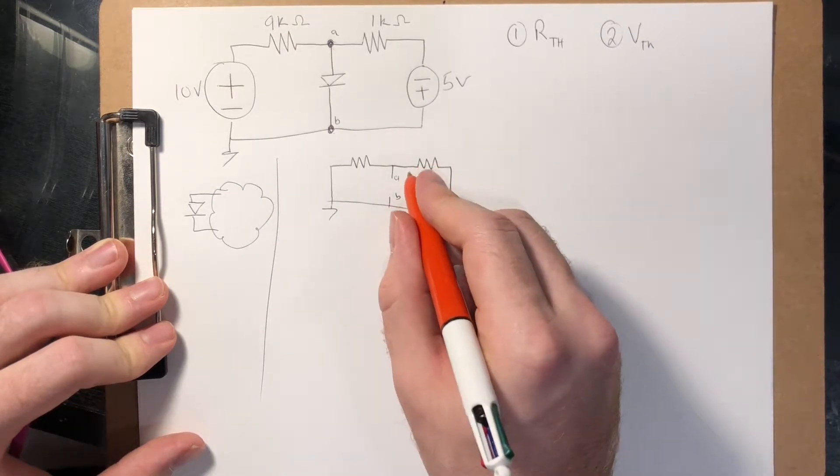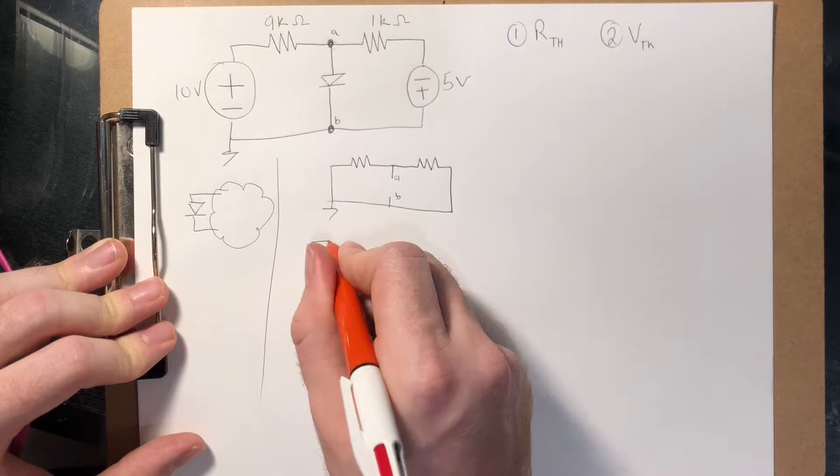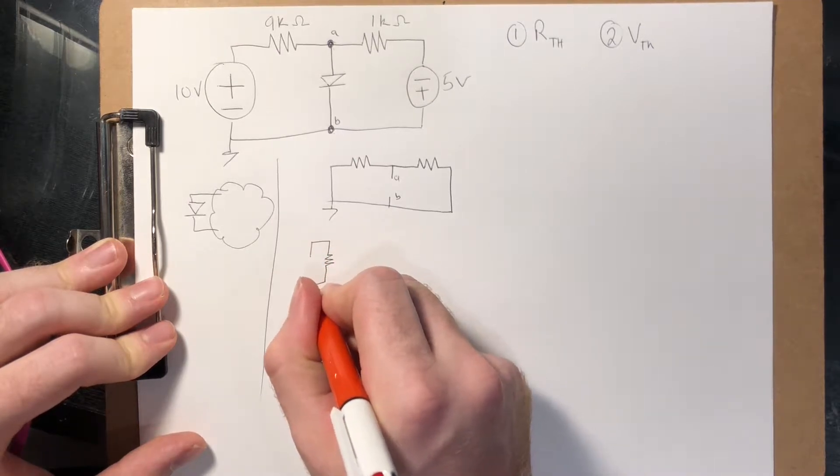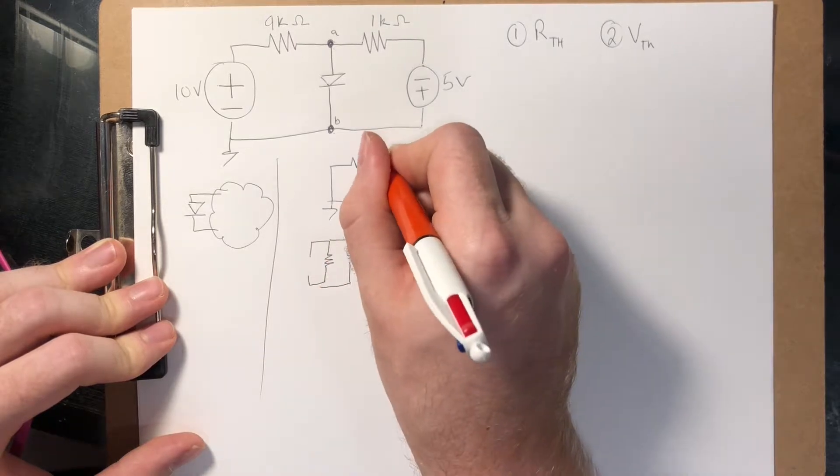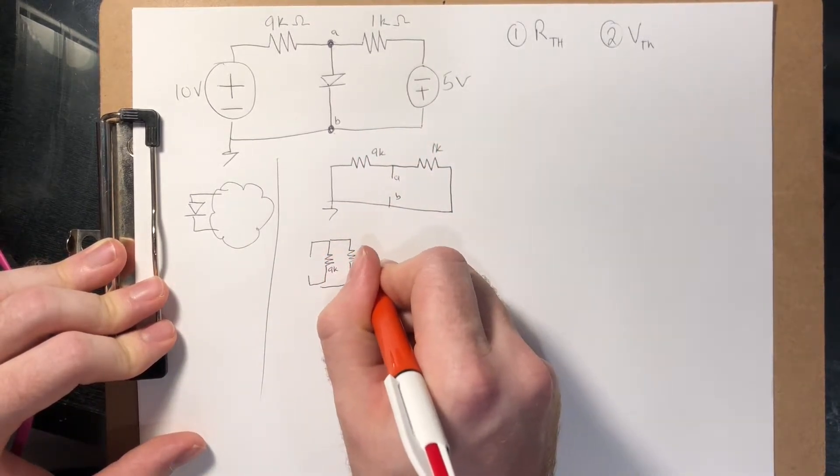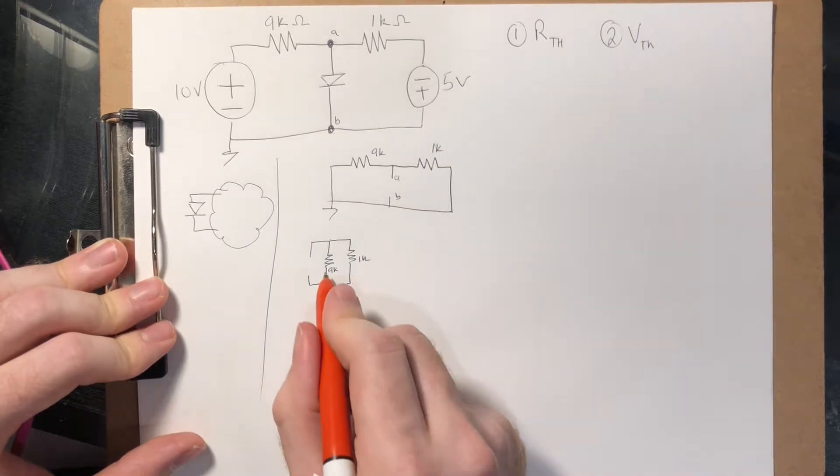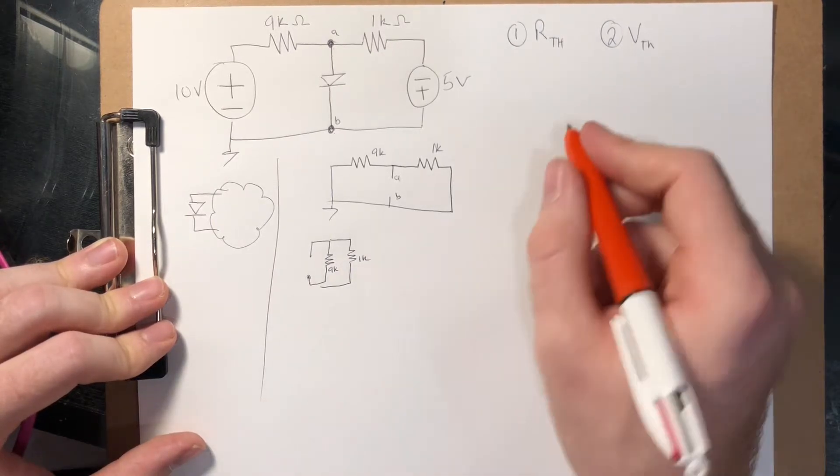And what is the resistance seen by terminals AB? Well, we can write this a different way to make it a little bit more intuitive. So if here's the 9k, 1k, we can see that this is just 9k in parallel with 1k. So perfect. Now we have R Thevenin.